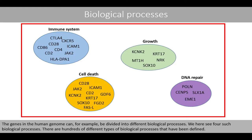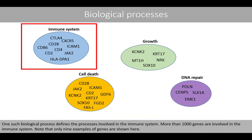The genes in the human genome can, for example, be divided into different biological processes. We here see four such biological processes. There are hundreds of different types of biological processes that have been defined. One such biological process defines the processes involved in the immune system. More than 1000 genes are involved in the immune system. Note that only nine examples of genes are shown here.